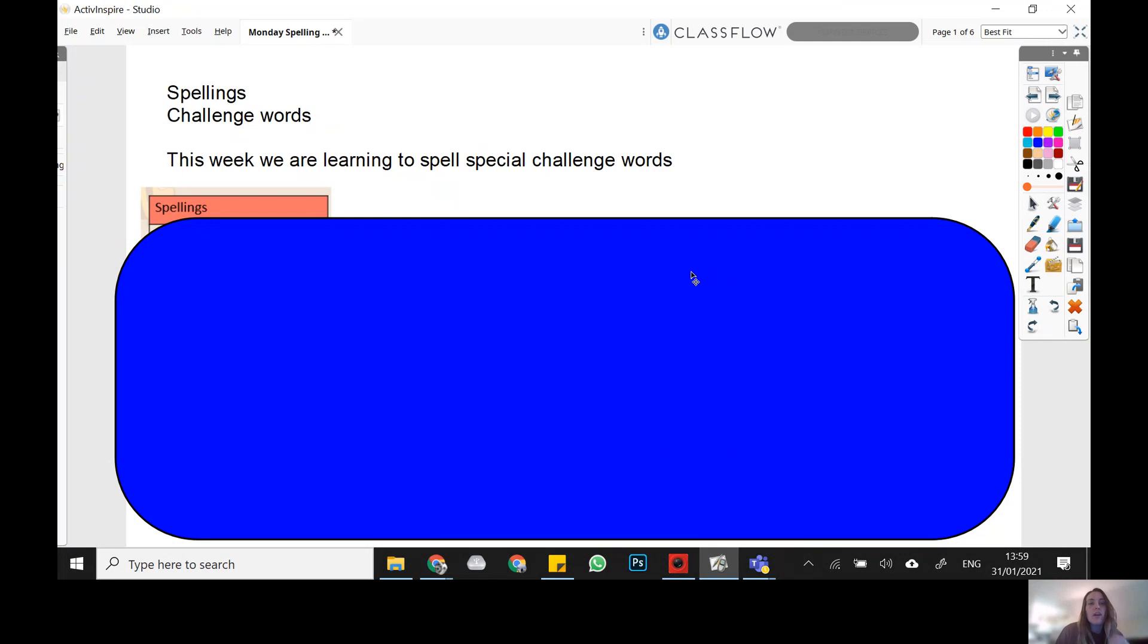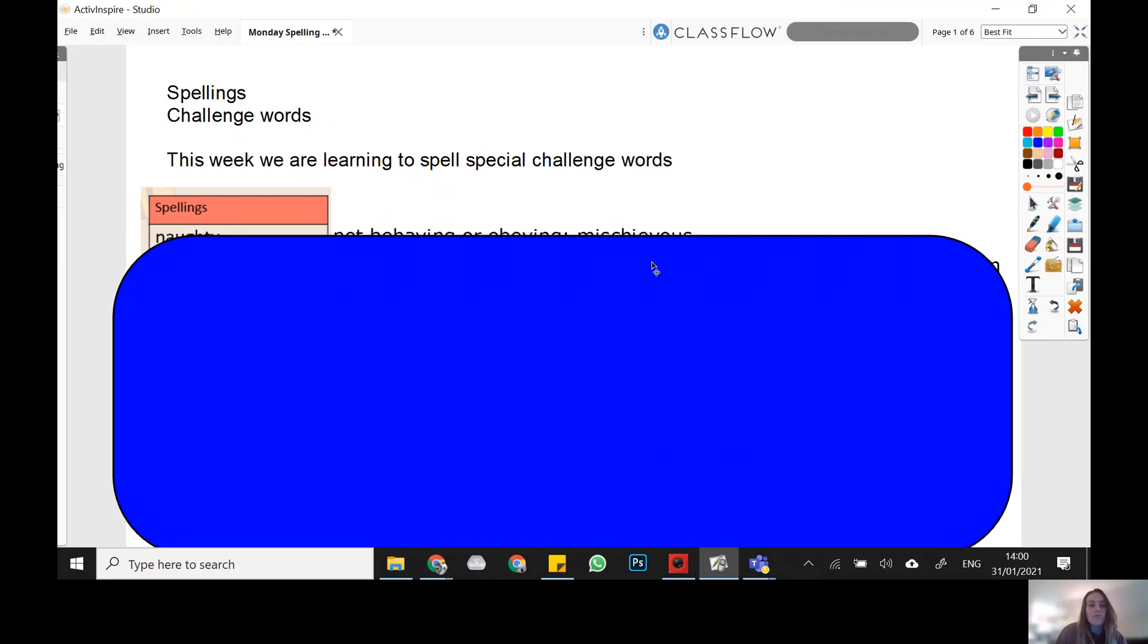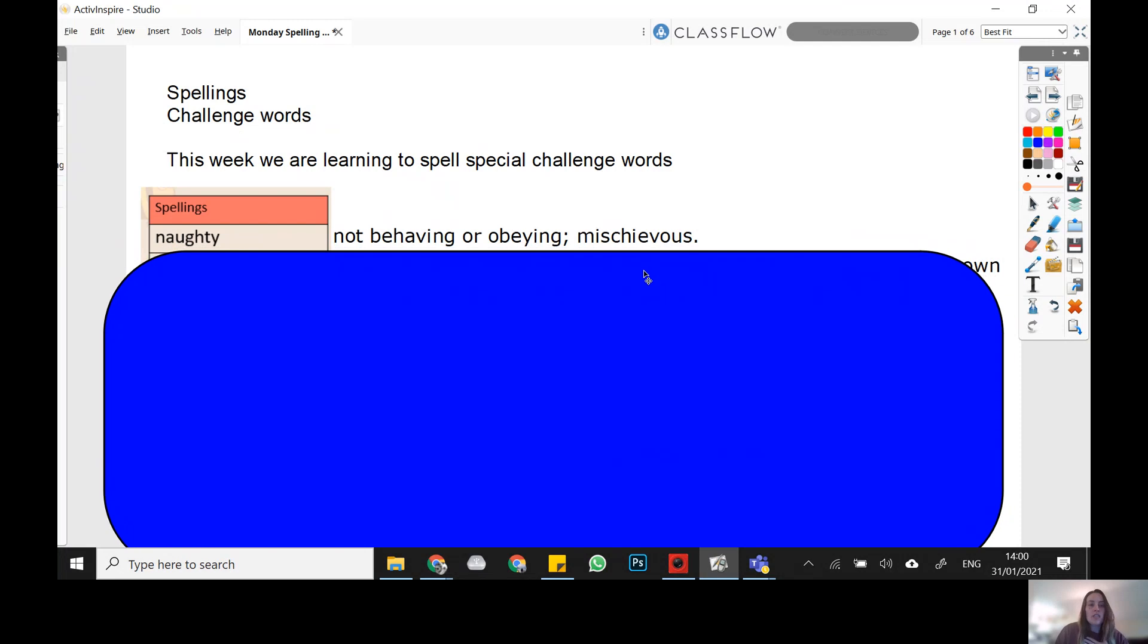So I'm going to jump straight into it. I'm going to give you the word and the definition, then I've got two activities for you to practice those. So the first word is naughty. Naughty means not behaving or obeying. You might say the dog was very naughty when it chewed my shoe or something like that.